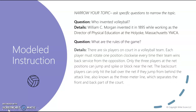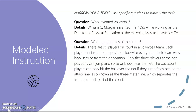Question: What are the rules of the game? Details: There are six players on court in a volleyball team. Each player must rotate one position clockwise every time their team wins back service from the opposition. Only the three players at the net position can jump and spike or block near the net. The back court players can only hit the ball over the net if they jump from behind the attack line, also known as the three-meter line, which separates the front and back part of the court. This is a really good topic because I love volleyball.